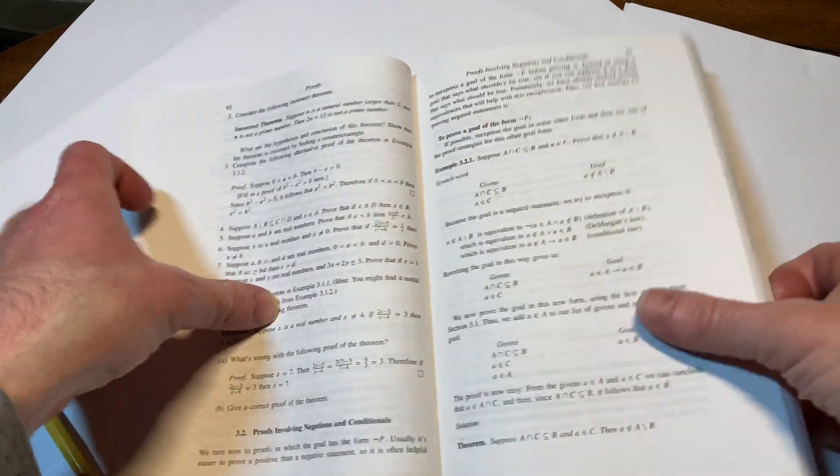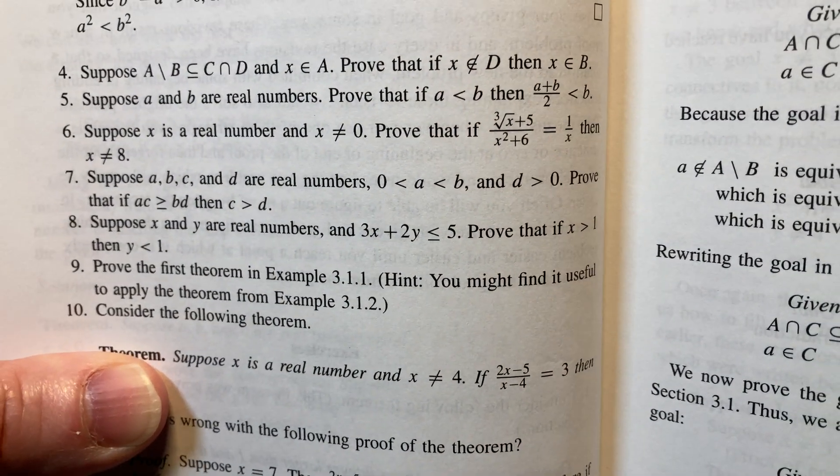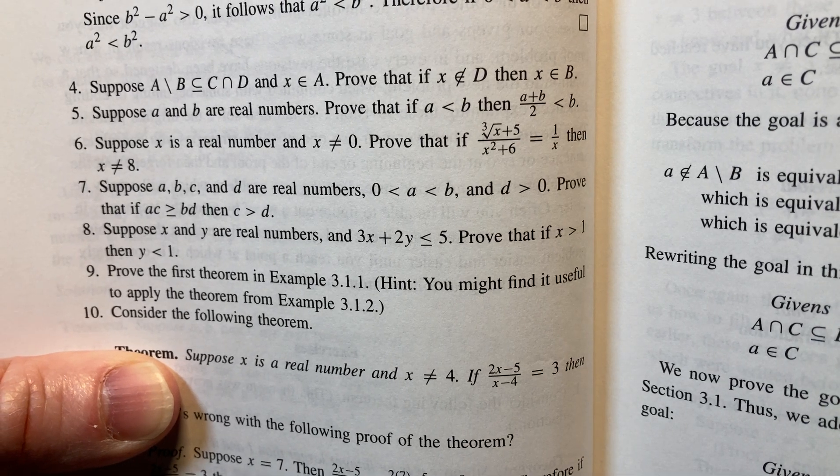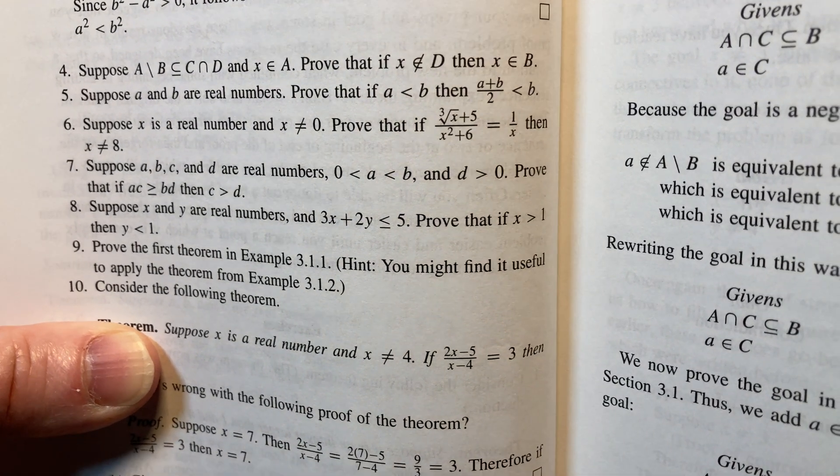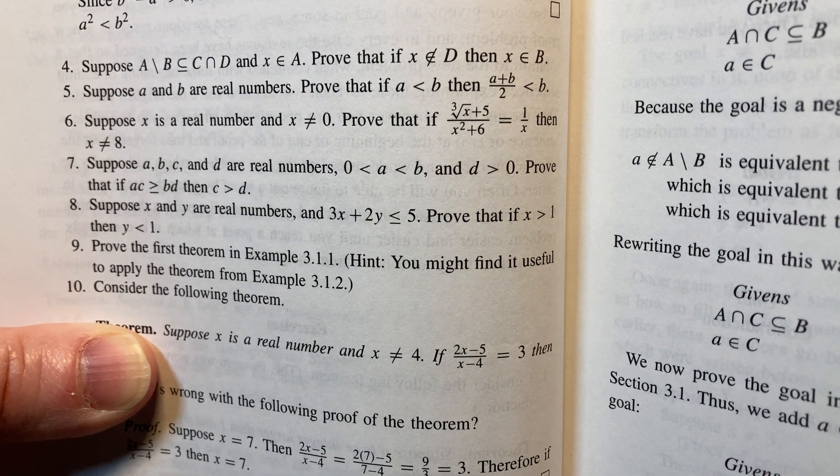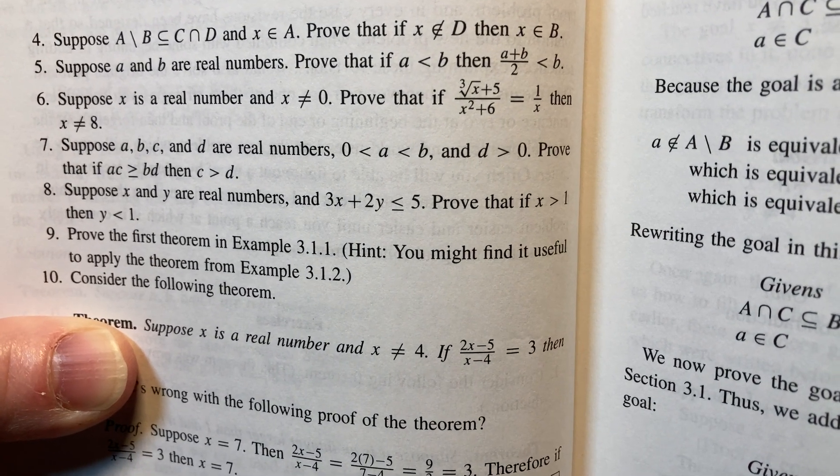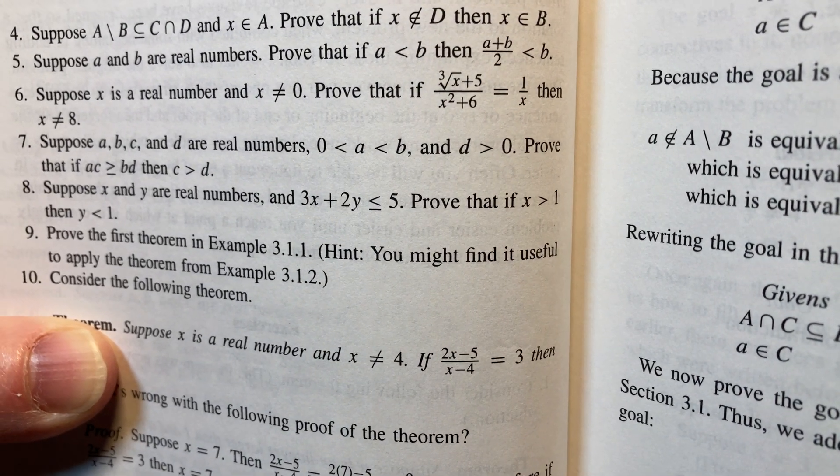Here's some proofs here. Let's look at these. These look really cool. Suppose A and B are real numbers. Prove that if A is less than B, okay, then A plus B over 2 is less than B. Cool. Suppose X is a real number and X is not 0. Prove that. That equation is true. Then X is not 8.